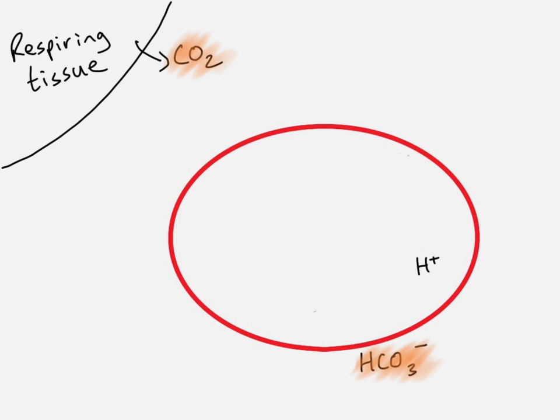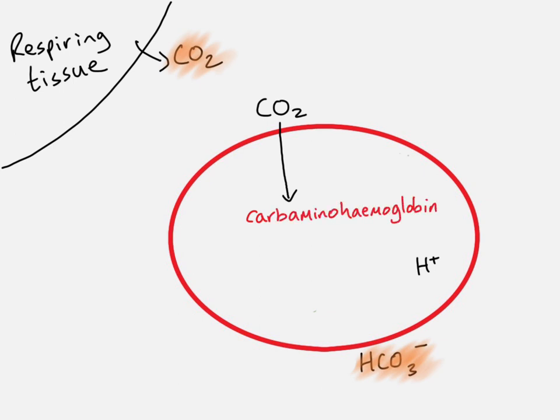There are still some hydrogen ions remaining in the red blood cell. There are also thousands of molecules of hemoglobin in the red blood cell, and some of the carbon dioxide that enters combines with the hemoglobin — specifically with the amino part of the protein — forming something called carbaminohemoglobin. This reaction also produces more hydrogen ions. That is the third way carbon dioxide from respiration is transported — as carbaminohemoglobin.